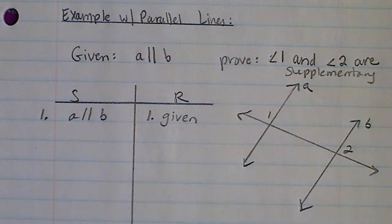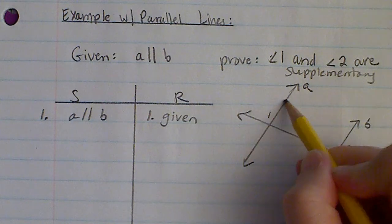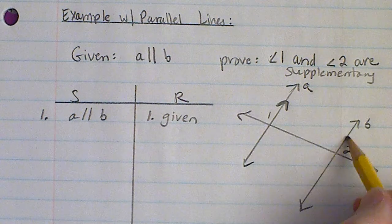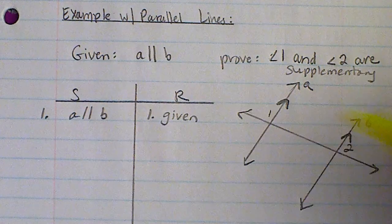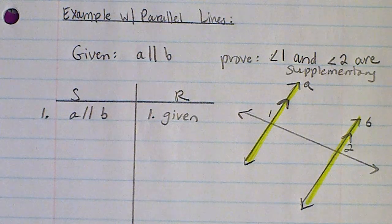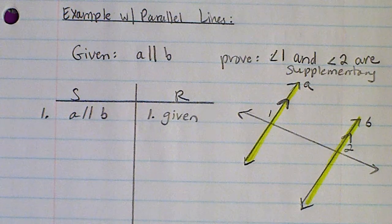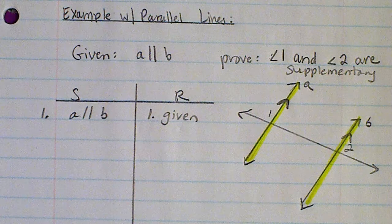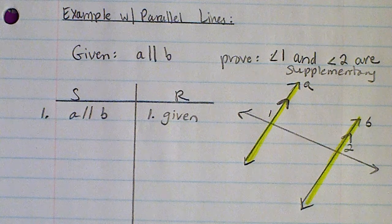Here's an example with parallel lines. My given information is that line a is parallel to line b. Right away when you read that given information, you always want to mark up your diagram — if the symbols aren't already there, highlight or use a special color to indicate parallel lines so they're easy to spot. We're asked to prove that angle 1 and angle 2 are supplementary.